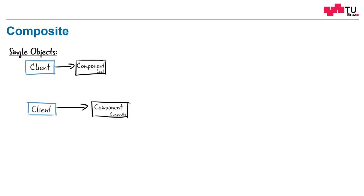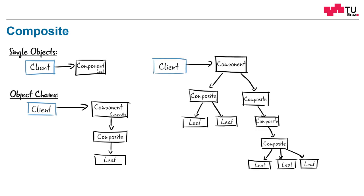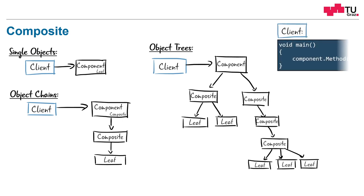If a client calls the same method from a component which actually is a composite, what happens behind is that this call gets transferred over to another composite and maybe to another leaf. We can consider object chains now. And for the client, it makes no difference if we call a single object or an object chain. And even further, we can call whole trees of composites and leaves. This can be arbitrarily structured. A single chain is just a very simple tree, but this tree can be arbitrarily complex. For the client, it doesn't make any difference because the client just calls the method as he would do with single objects. This is what we wanted.